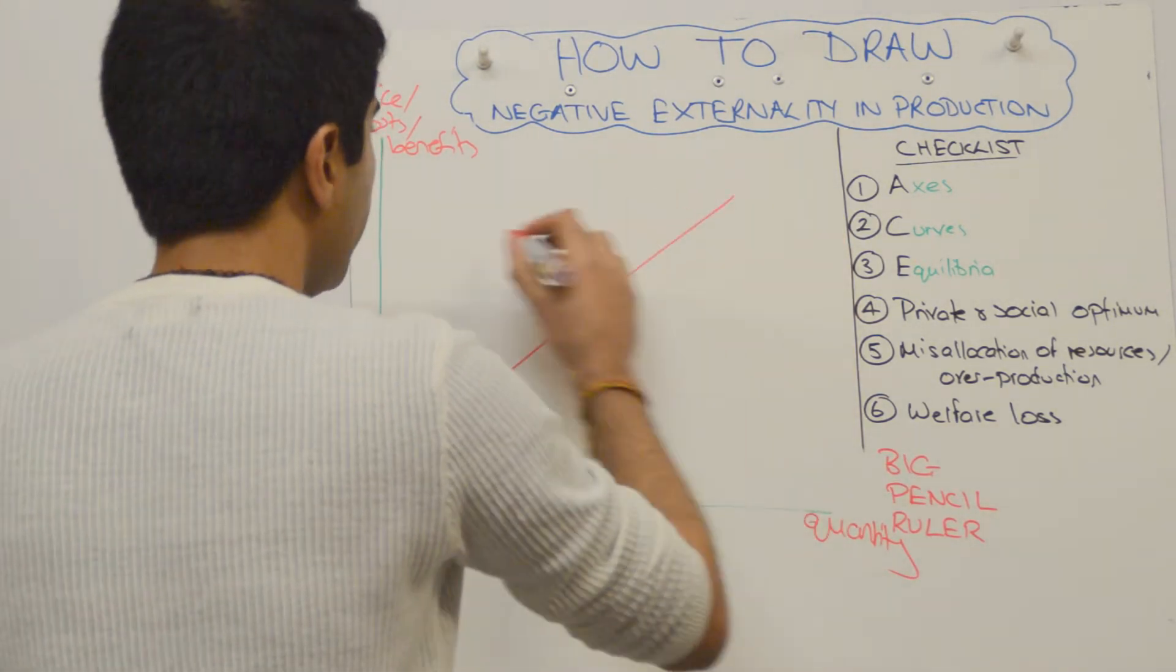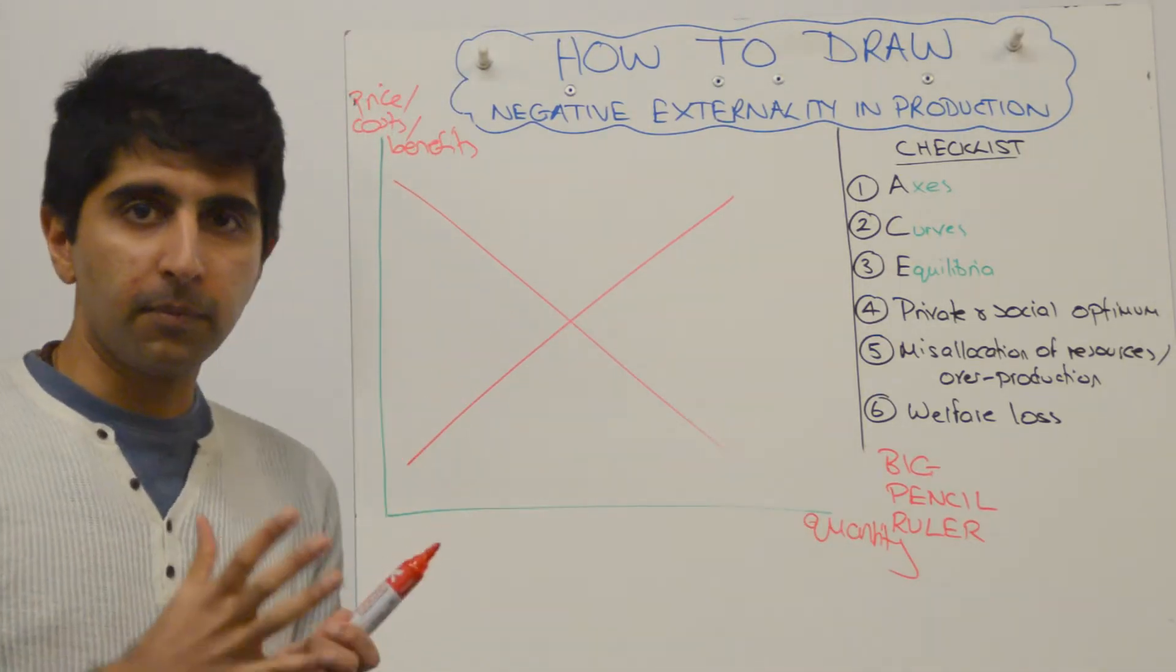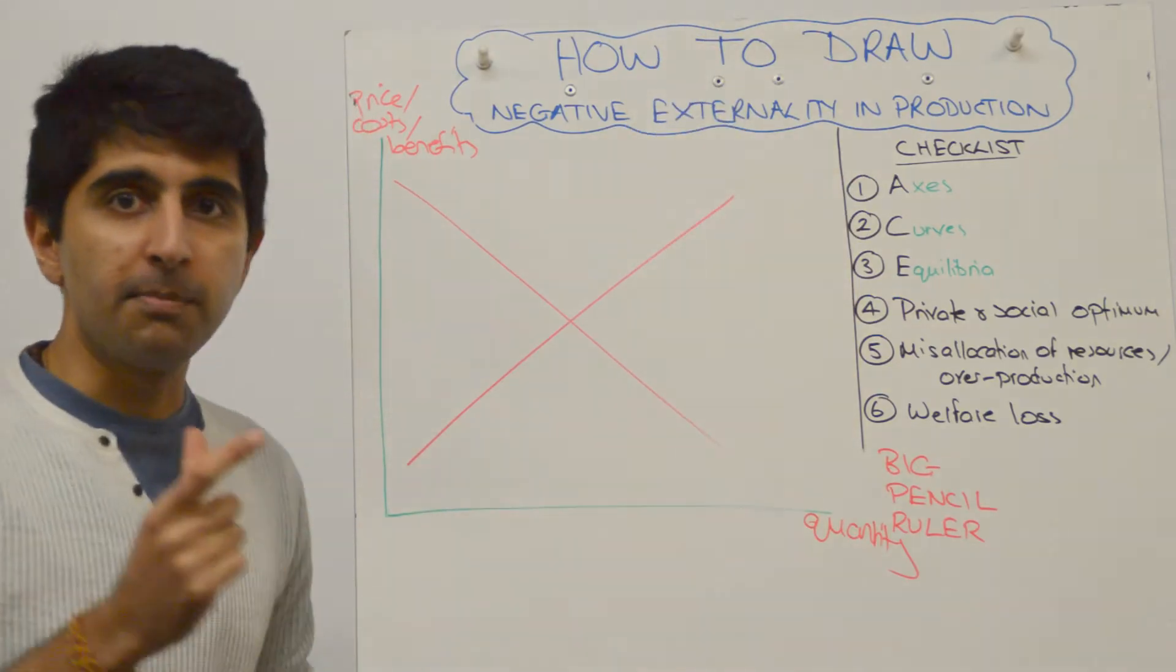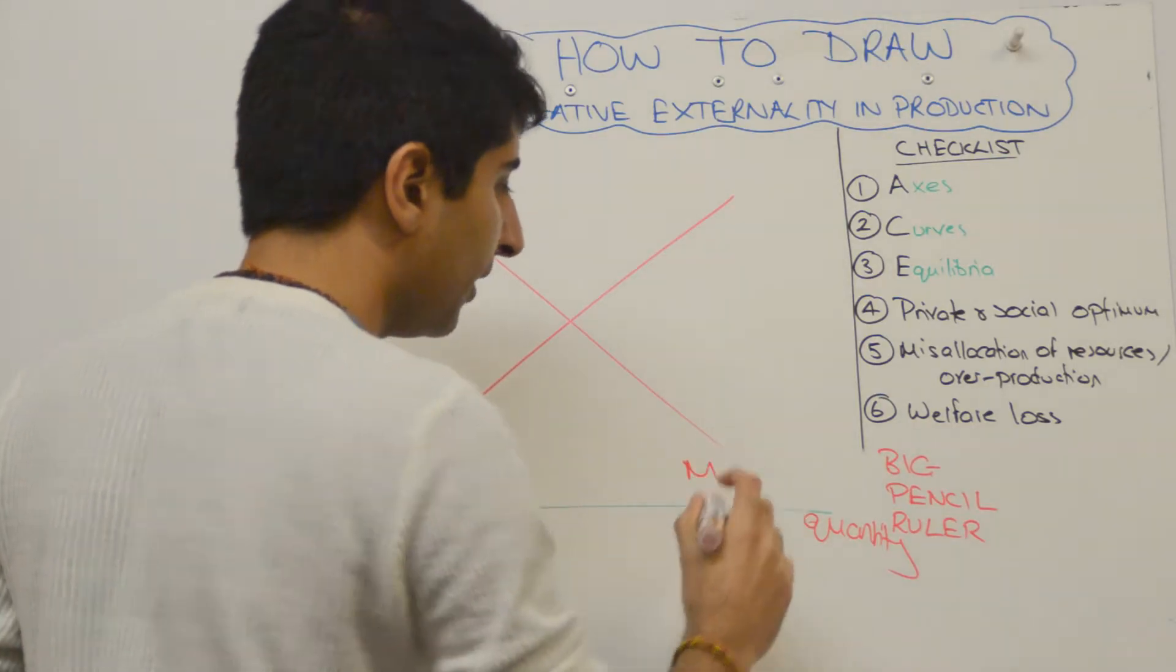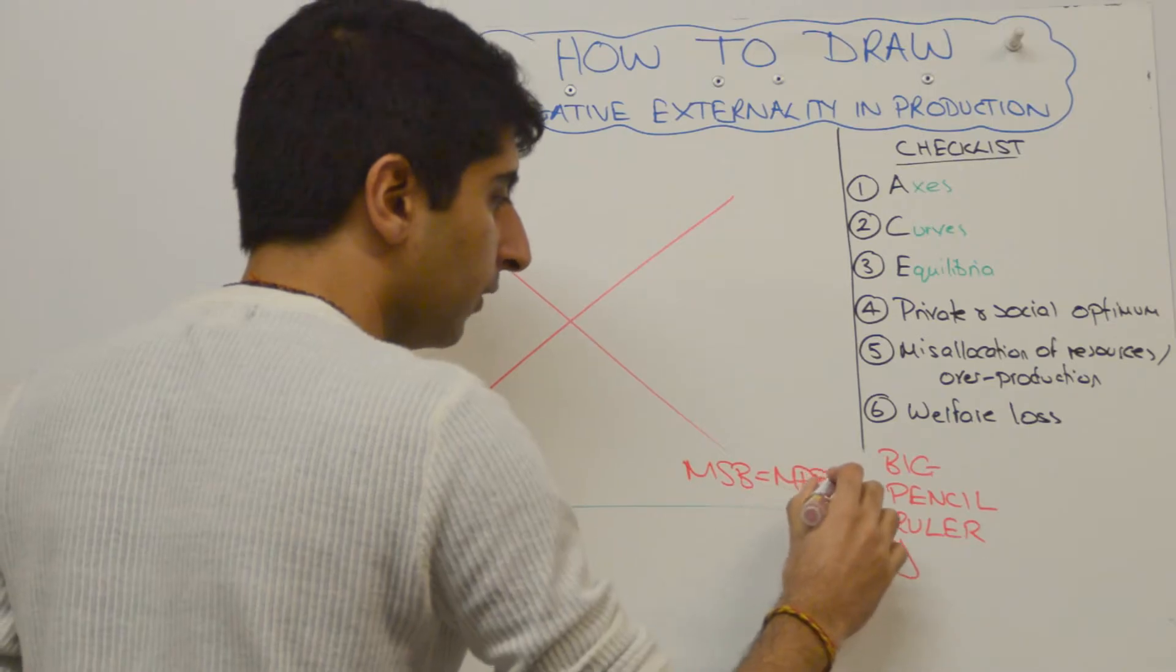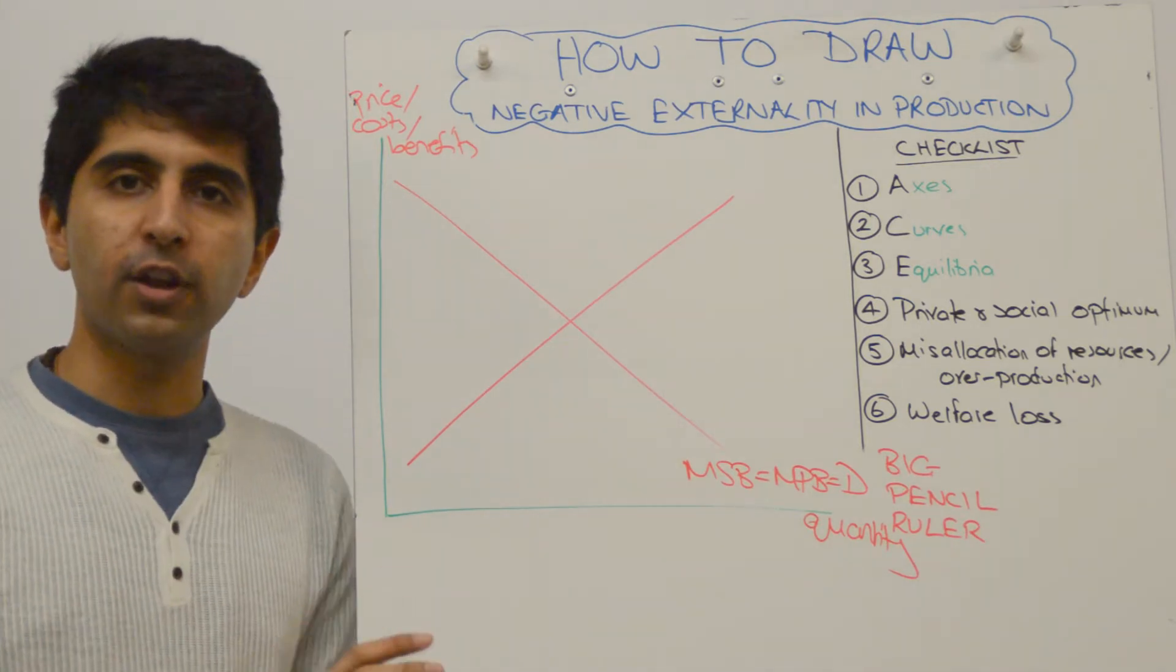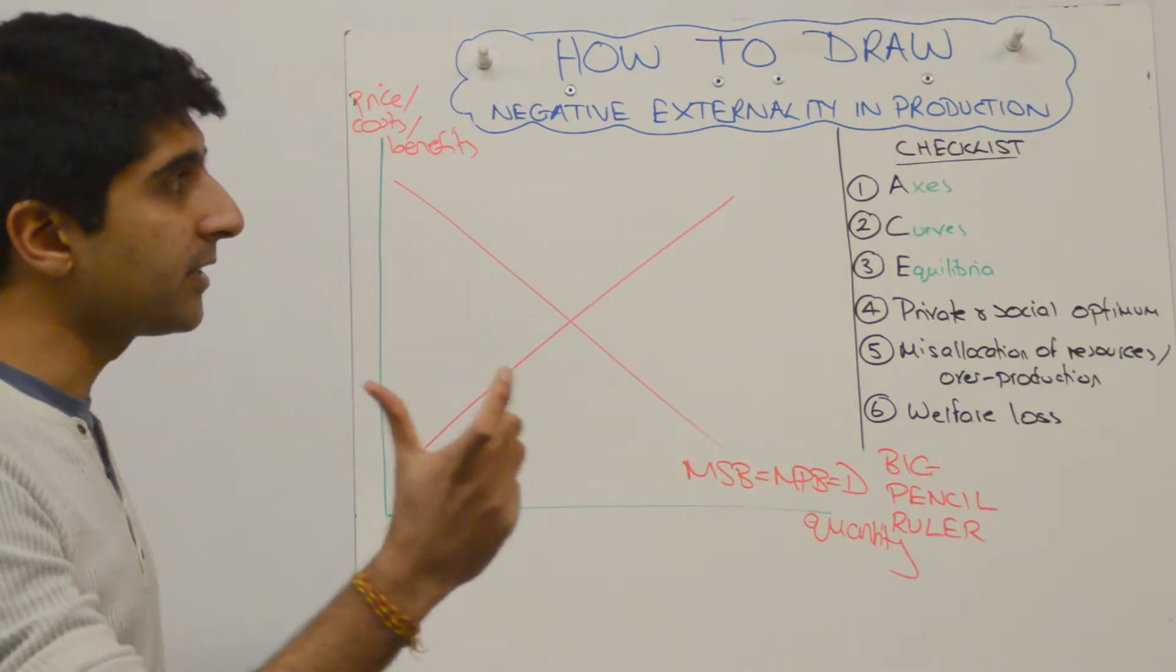We'll start as always with an equilibrium. Now you know that with market failure diagrams there is some discrepancy either in the cost curves or in the benefit curves. We have a negative externality in production which means that we're looking at the cost curves. So that means we're not going to be altering our benefits curves. So our MSB is going to be equal to our MPB which is going to be equal to demand. Nice full labeling there. We know the discrepancy is in the cost curves. The marginal social cost curve is different to the marginal private cost curve.